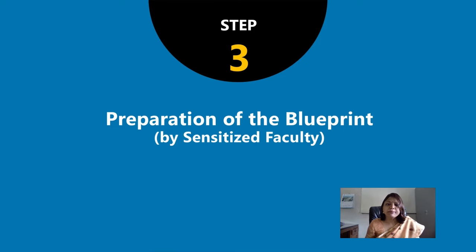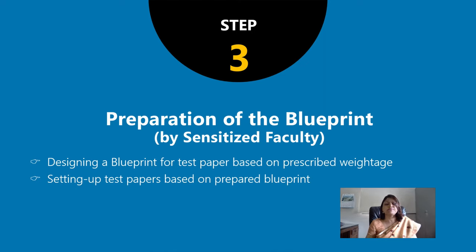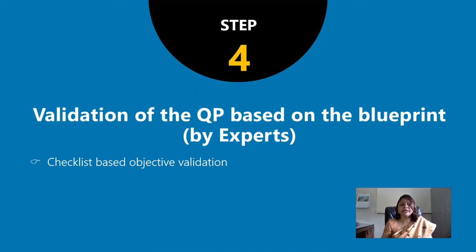Step three will be preparation of the blueprint. After sensitization of the faculty, you yourself will be preparing a blueprint for the question paper, and based on that blueprint and prescribed weightage, you will set up a question paper. The next step is validation of the question paper against the blueprint. This is the role of experts — we have identified five senior members who will be the experts for this. They will be validating the question paper you have set, but here blinding will be applied, so experts will not know who has set which question paper. This validation will be objective and based on a checklist, making it more objective.